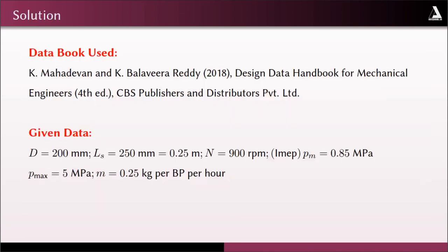The data book used for solving this numerical example is the one prepared by Mahadevan and Kaibala, published by CBS Publishers and Distributors Pvt Ltd, titled 'Design Data Handbook for Mechanical Engineers.' The given data are: diameter of piston D = 200 mm, length of stroke Ls = 250 mm, speed N = 900 rpm, indicated mean effective pressure IMEP or Pm = 0.85 MPa, maximum pressure Pmax = 5 MPa, specific fuel consumption m = 0.25 kg/BP/hr.